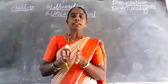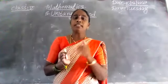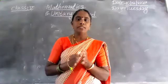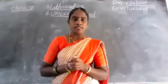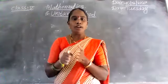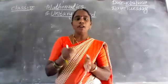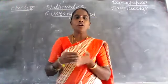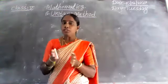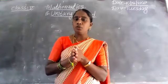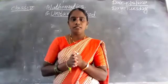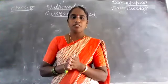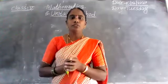In problems related to unitary method, the cost of many things is given in the problem. When many things' cost is given, we first have to find out the cost of one thing. Afterwards we find the cost of more or fewer things as required. For solving this, we go from many to one, then from one to many things. I will explain one problem to clarify.